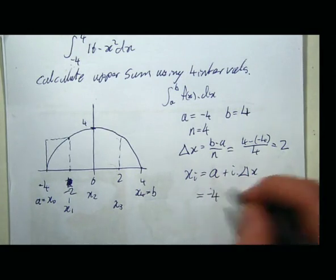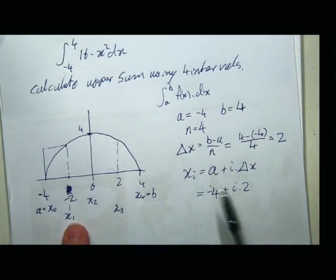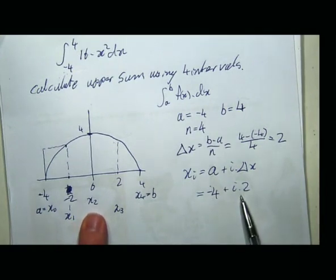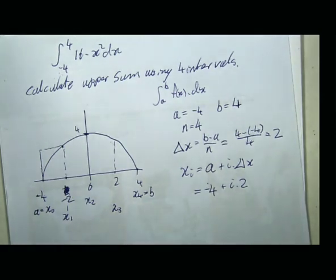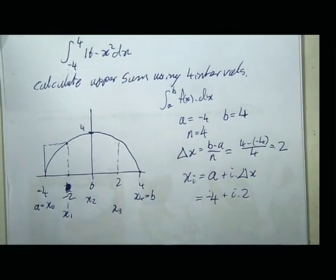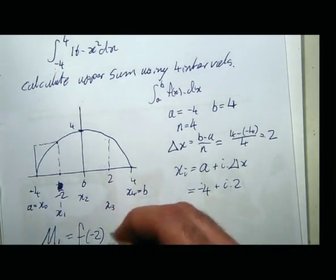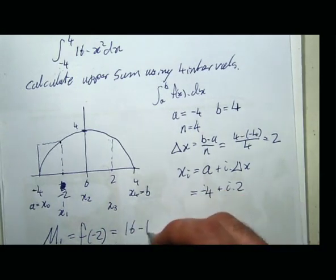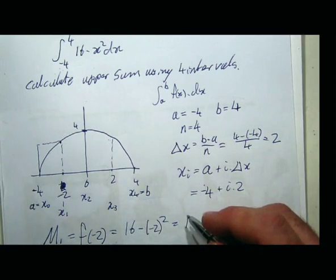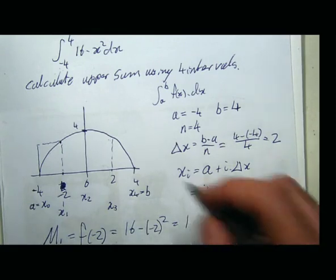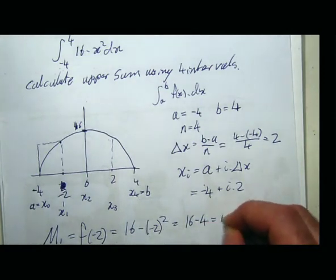So x₁ is -4+2, x₂ is -4+4, x₃ is -4+6, x₄ is -4+8. My maximum M₁ is going to be f(-2), which is 16 minus (-2)² = 16 minus 4 = 12. And f(0) is 16 minus 0² = 16.